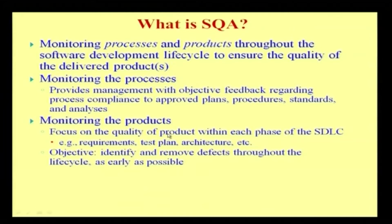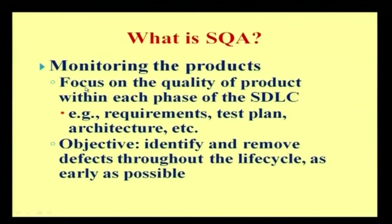When it comes to monitoring the product, it focuses on the quality of the product within each phase of the software development life cycle. For example, it starts with the requirements, creating the test plan, drawing the high-level architecture, and going to module design and so on. The objective is to find, identify, and remove defects throughout the life cycle as early as possible — identifying and removing as many defects as possible throughout the entire life cycle ensures quality on the product.